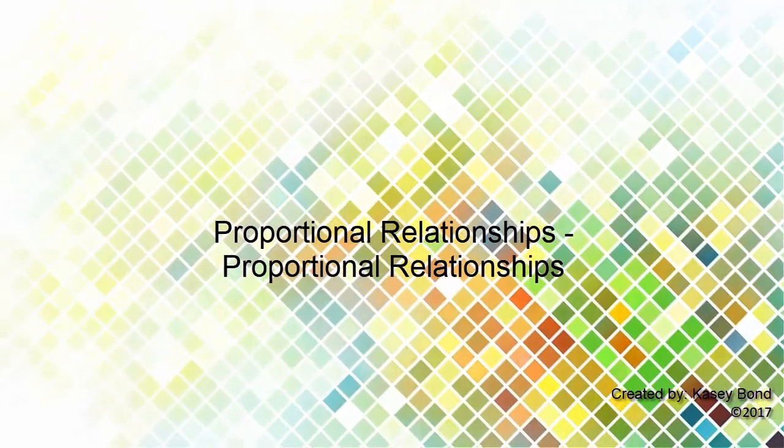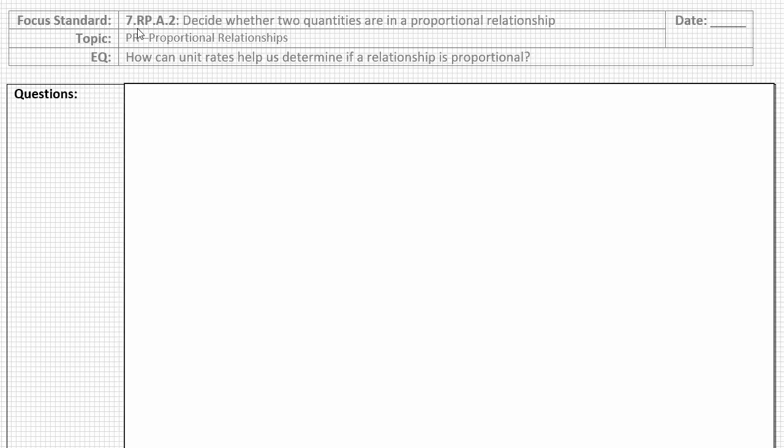For today's lesson, our HOCA standard comes from grade 7, Ratios and Proportions, Standard A.2: Decide whether two quantities are in a proportional relationship. Our topic for today's lesson comes from Proportional Relationships. Our essential question is, how can unit rates help us determine if a relationship is proportional? Please take a moment, pausing the video if you need to, to copy down the topic and the essential question into your header, along with today's date, set up your question column and your note column, and resume the video when you're ready to begin.